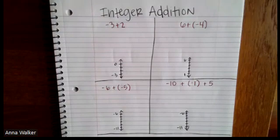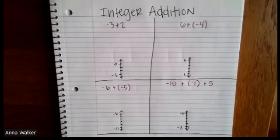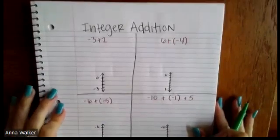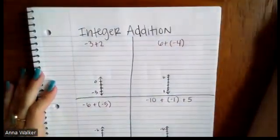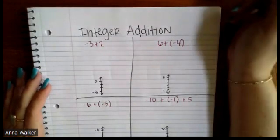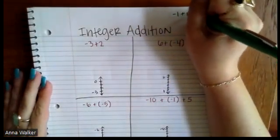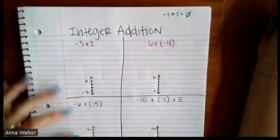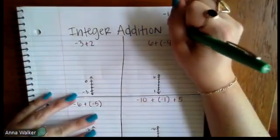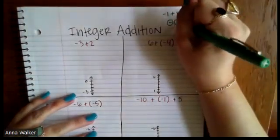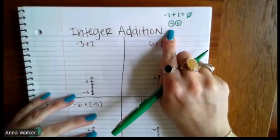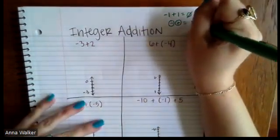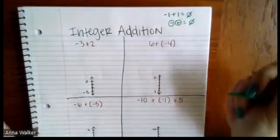Today we're going to talk about what happens when we add positive and negative whole numbers. We know that when we add positive numbers together, our answers get bigger. Something important is this idea of what's called a zero pair, which we talked about in the absolute value and opposites video. If a number is added to its opposite — for example, negative one plus one — it is going to be equivalent to zero. So anytime we have a negative value and add a positive value, those combined equate to zero.